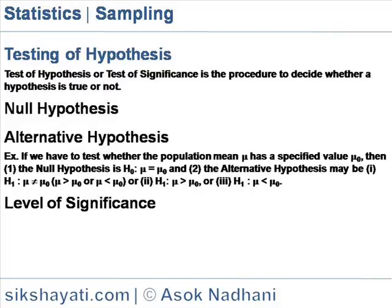Similarly, if we choose a 1% level of significance in testing a hypothesis, then there is only 1 case in 100 that we would reject the hypothesis when it should be accepted.